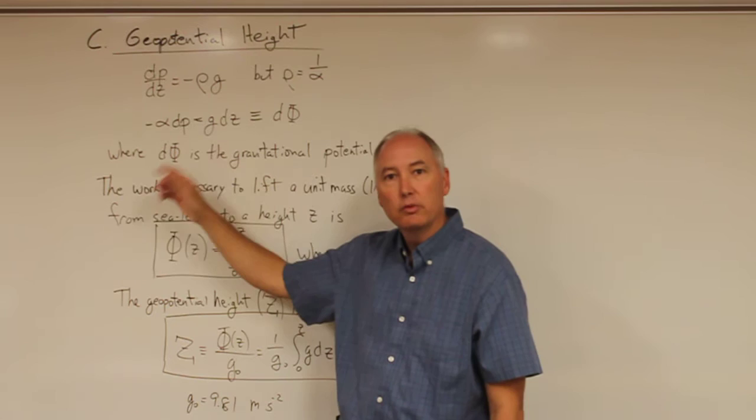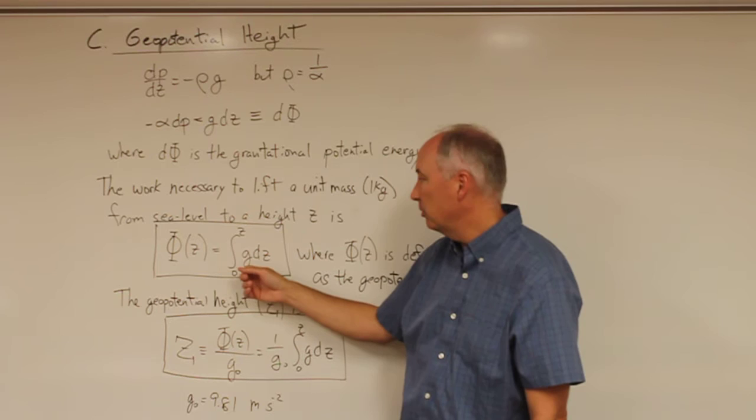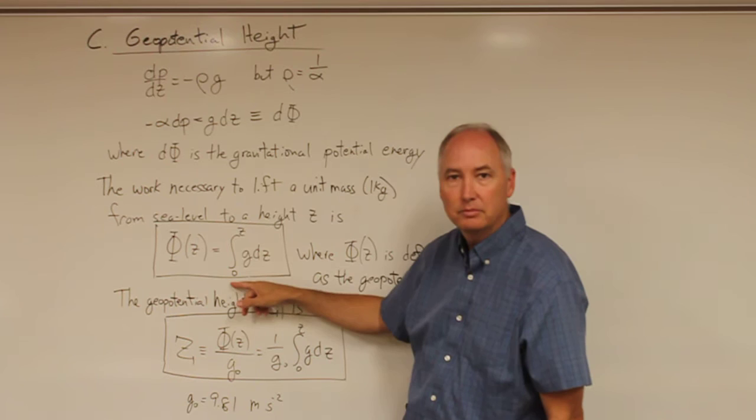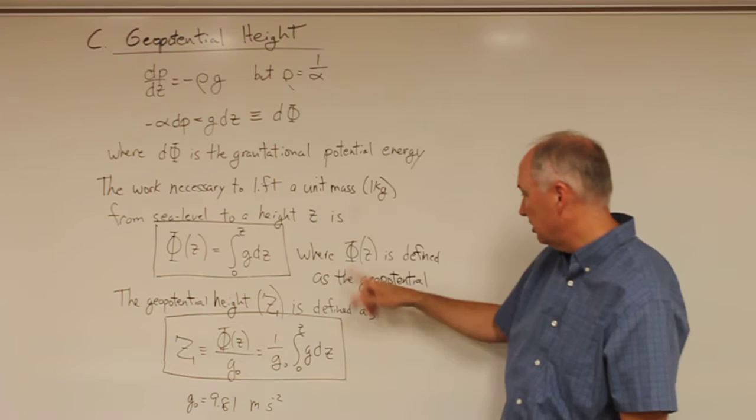Under this scenario, the work necessary to lift a unit mass from sea level to a height z is the integral of gravity (which is no longer constant) times dz, integrated from sea level up to that height. We define the work required to lift that air parcel as the geopotential.